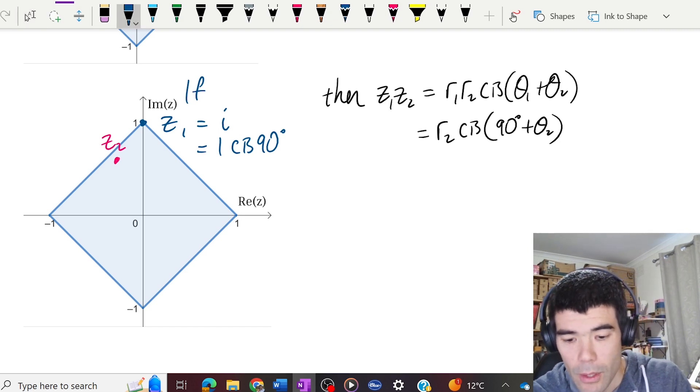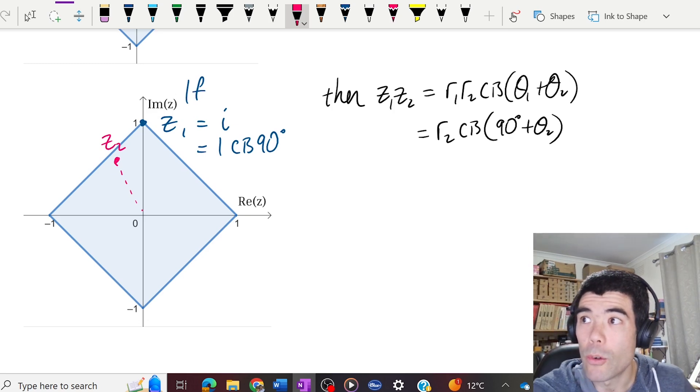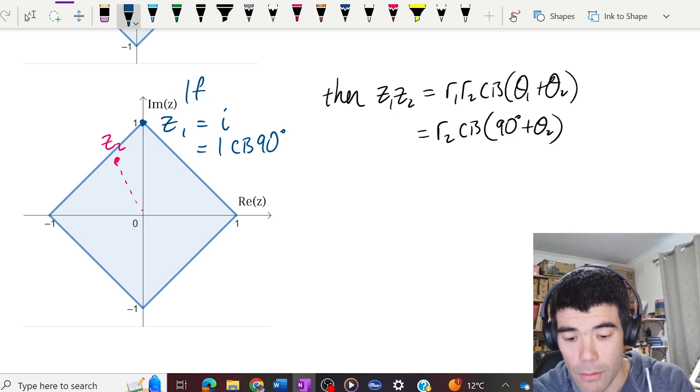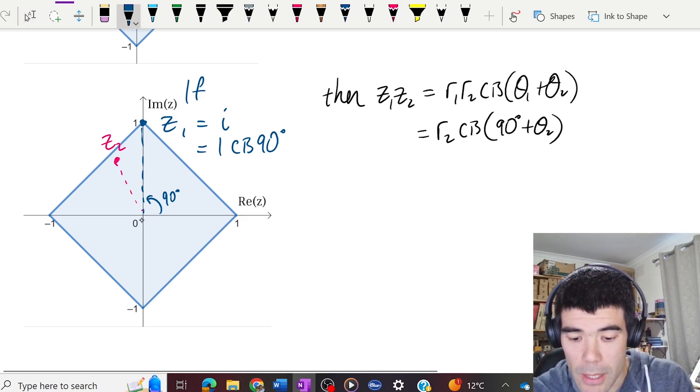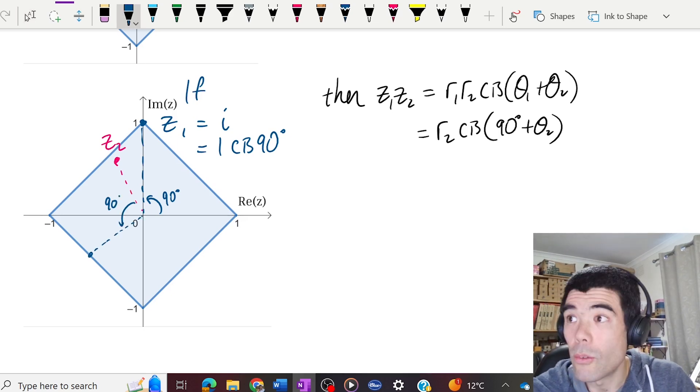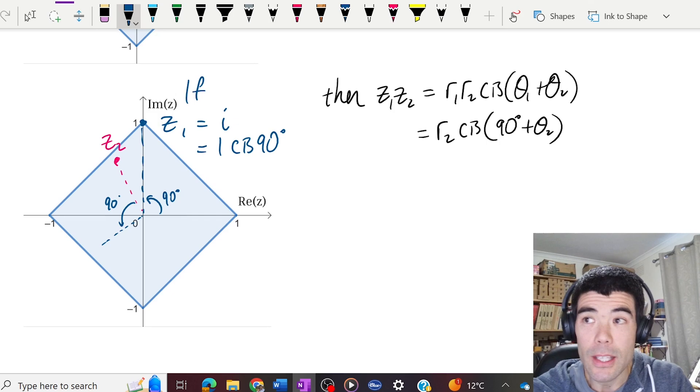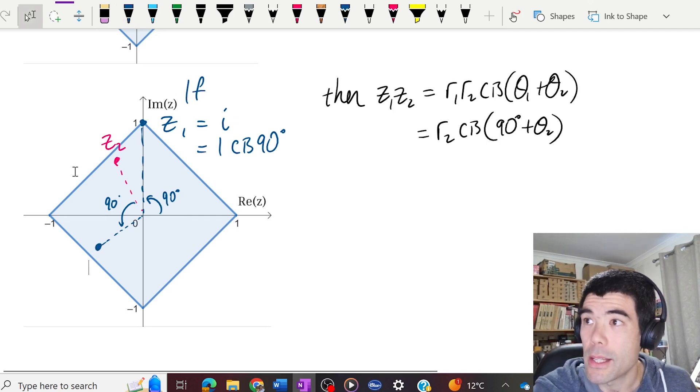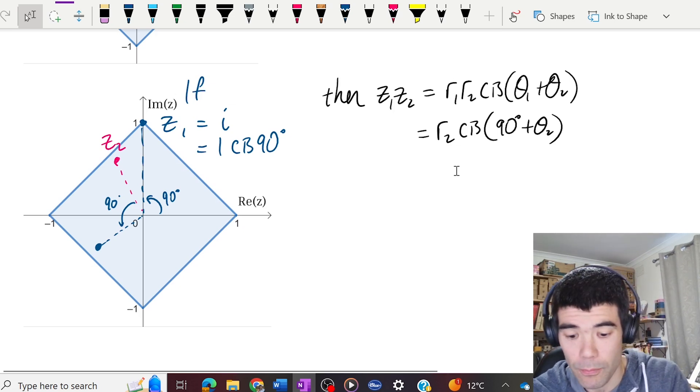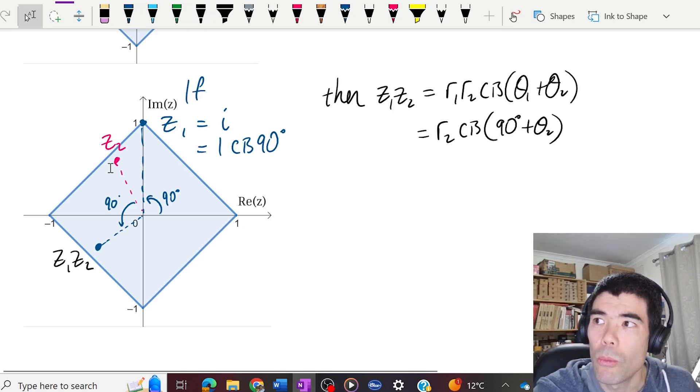On the diagram, what's going to happen to z2, it's going to move around exactly 90 degrees. So z1 z2 is going to be exactly 90 degrees around from z2. And the distance from the origin is going to be exactly the same as z2. It's just r2, r2 times 1.